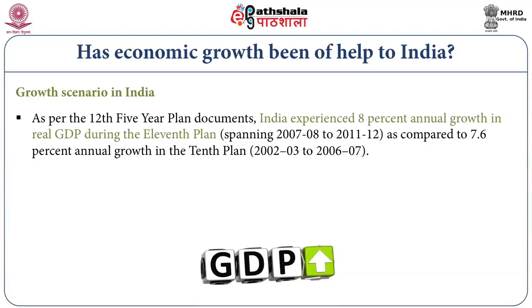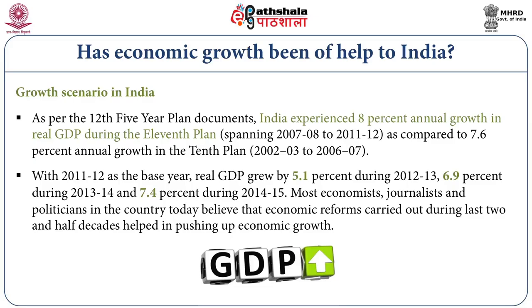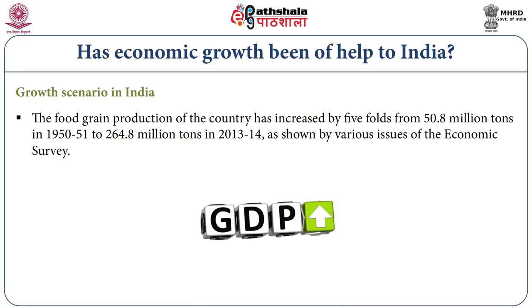Has economic growth been of help to India? As per the 12th Five-Year Plan documents, India experienced 8% annual growth in real GDP during the 11th Plan spanning from 2007-08 to 2011-12, compared to 7.6% annual growth in the 10th Plan from 2002-03 to 2006-07. With 2011-12 as the base year, real GDP grew by 5.1% during 2012-13, 6.9% during 2013-14, and 7.4% during 2014-15. Most economists, journalists and politicians believe that economic reforms carried out during the last two-and-a-half decades helped push up economic growth. The food grain production of the country has increased five-fold from 50.8 million tons in 1950-51 to 264.8 million tons in 2013-14.